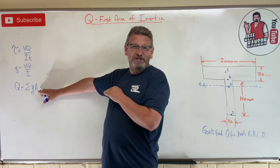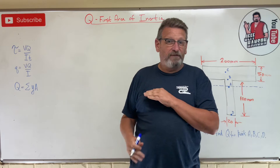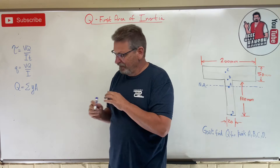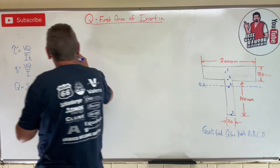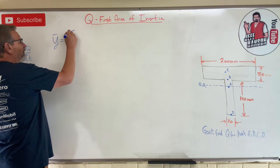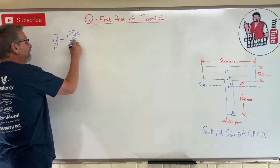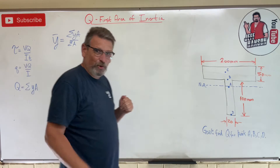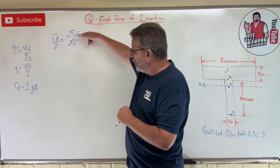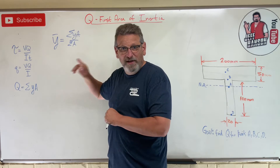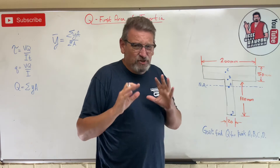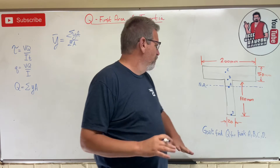Here's the equation for Q, the first area moment of inertia. This should look familiar — remember y-bar equals the sum of the y·A's over the sum of the A's? That's the centroid equation. The top half of the centroid equation is capital Q — that's the first area moment of inertia.